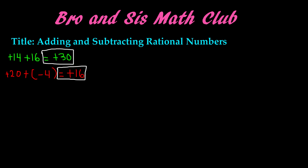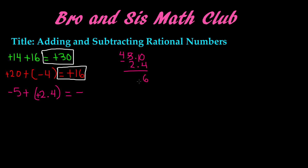This time let's include a decimal. Let's say we have negative 5 plus 2.4. Negative 5 is negative and 2.4 is positive — different signs — so we take the sign of the bigger number, which is 5, giving a negative sign in our answer. Then we subtract: 5.0 minus 2.4. We can't subtract 4 from 0, so we borrow from the 5, making it a 4. Then 10 minus 4 is 6, bring down the decimal, and 4 minus 2 is 2. Our difference is 2.6, so the final answer is negative 2.6.